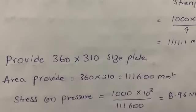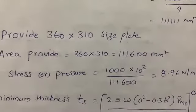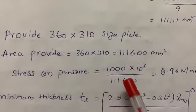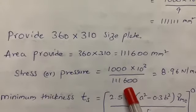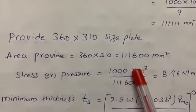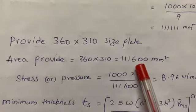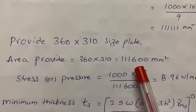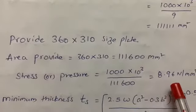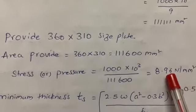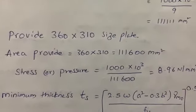After providing the plate size, we need to calculate the stress or pressure on the base plate. That is load divided by area: 1000 × 10³ divided by 111,600, giving W = 8.96 N/mm².